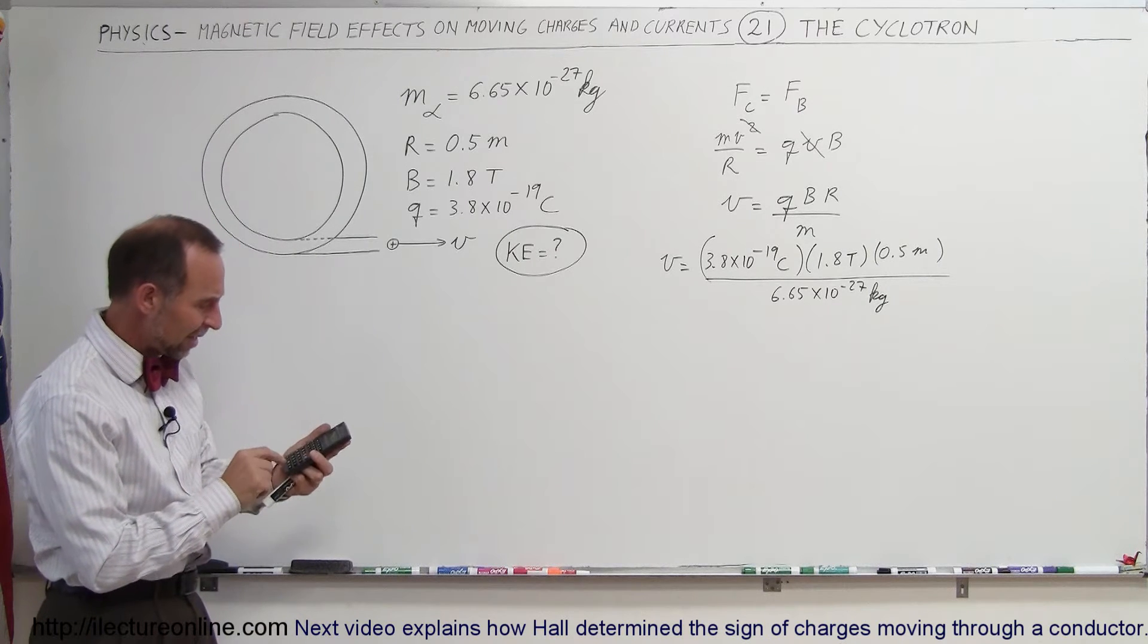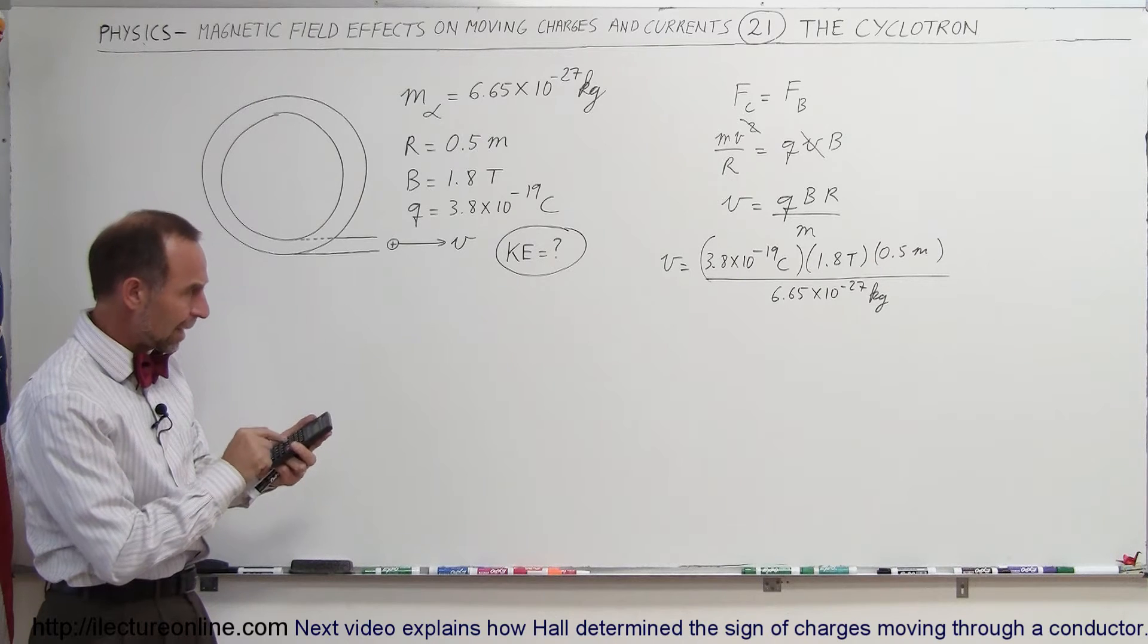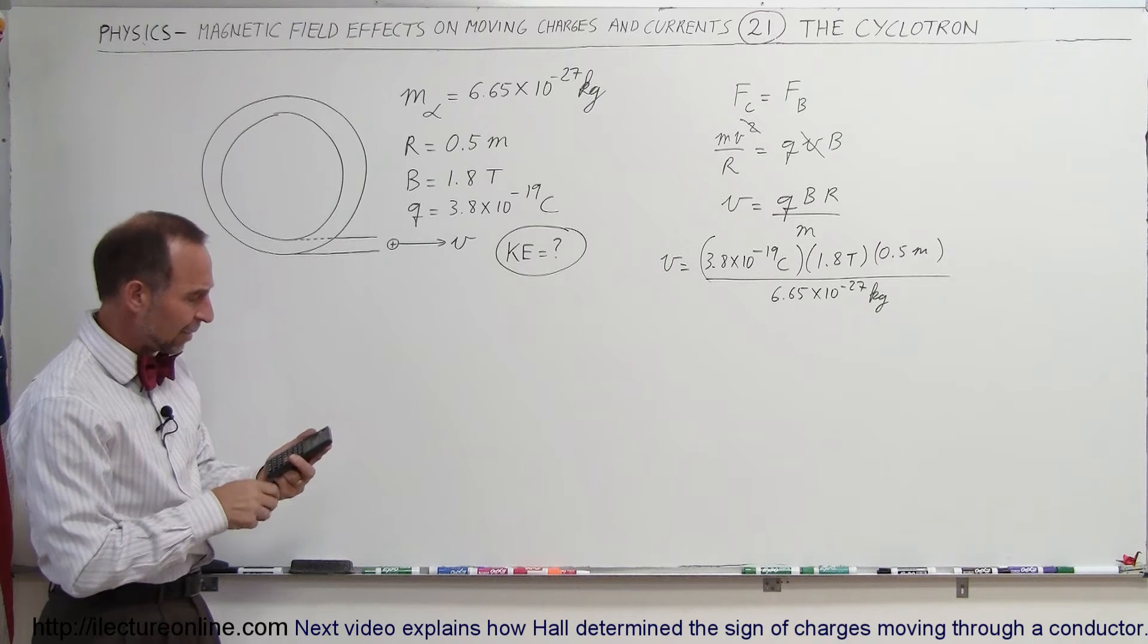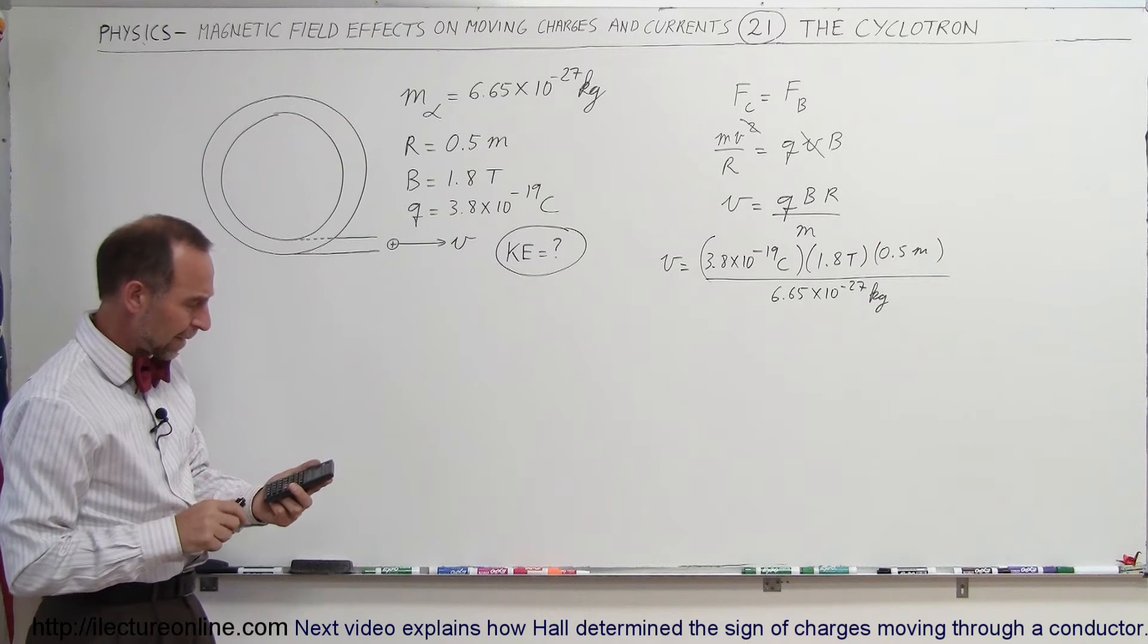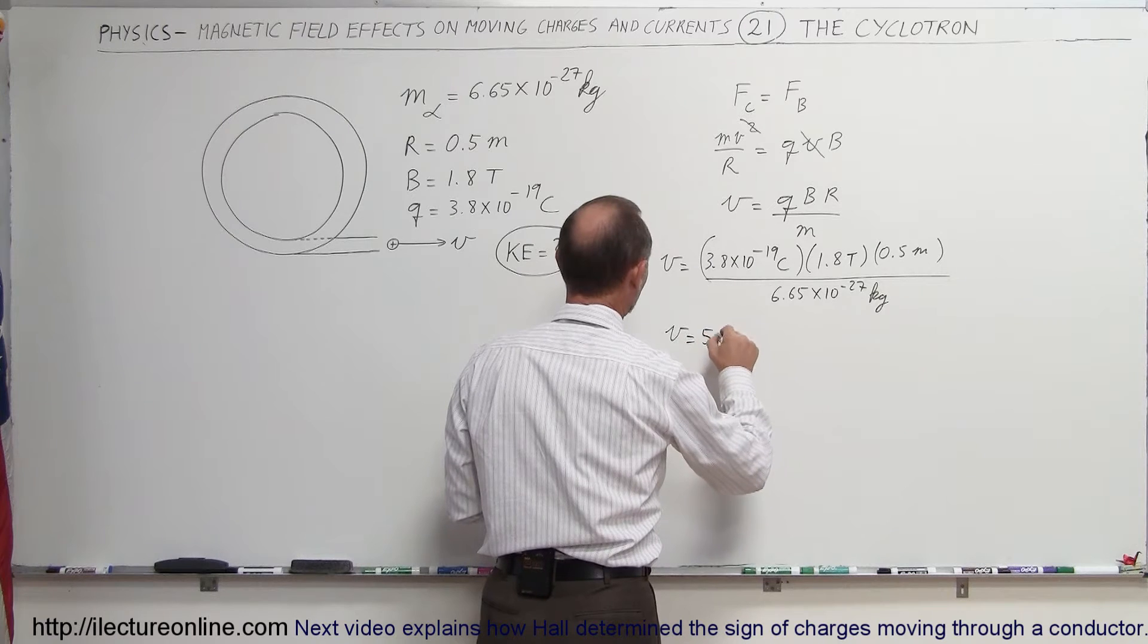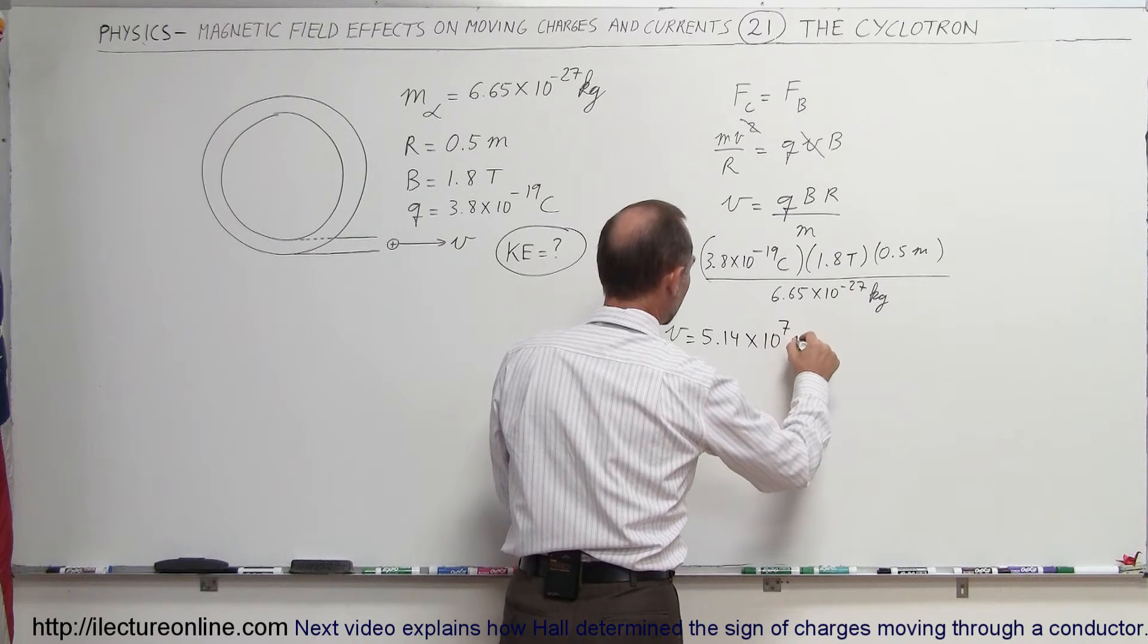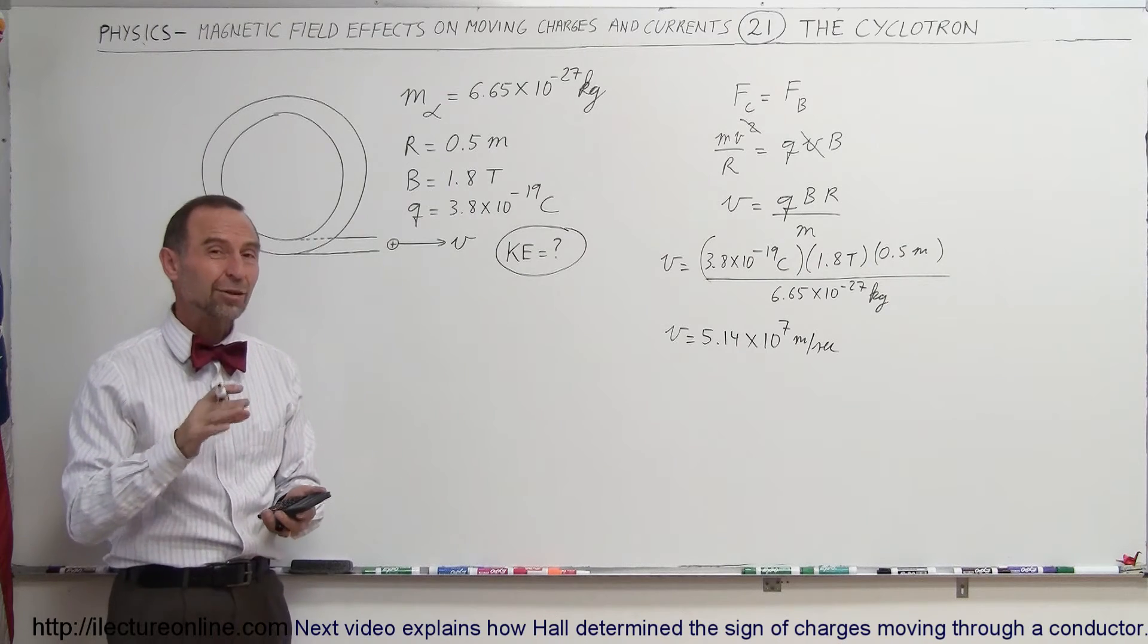Let's find out what the velocity is. 3.8 e to the minus 19 times 1.8 times 0.5 divided by 6.65 e to the minus 27. And it turns out that it's a velocity of 5.14 times 10 to the 7 meters per second. That's quite amazing. That's quite fast because the speed of light is 3 times 10 to the 8.